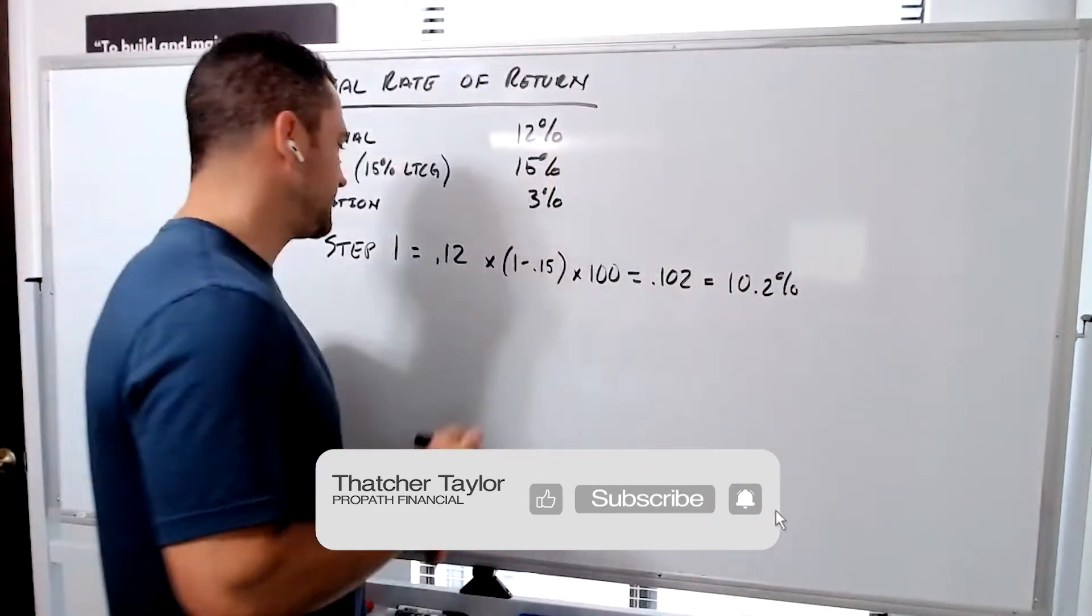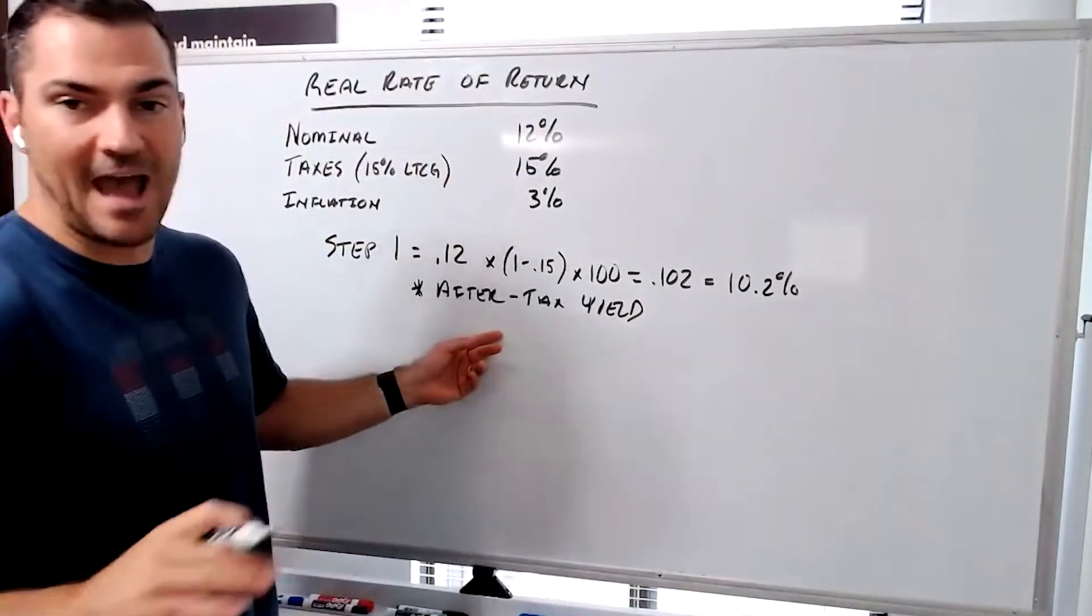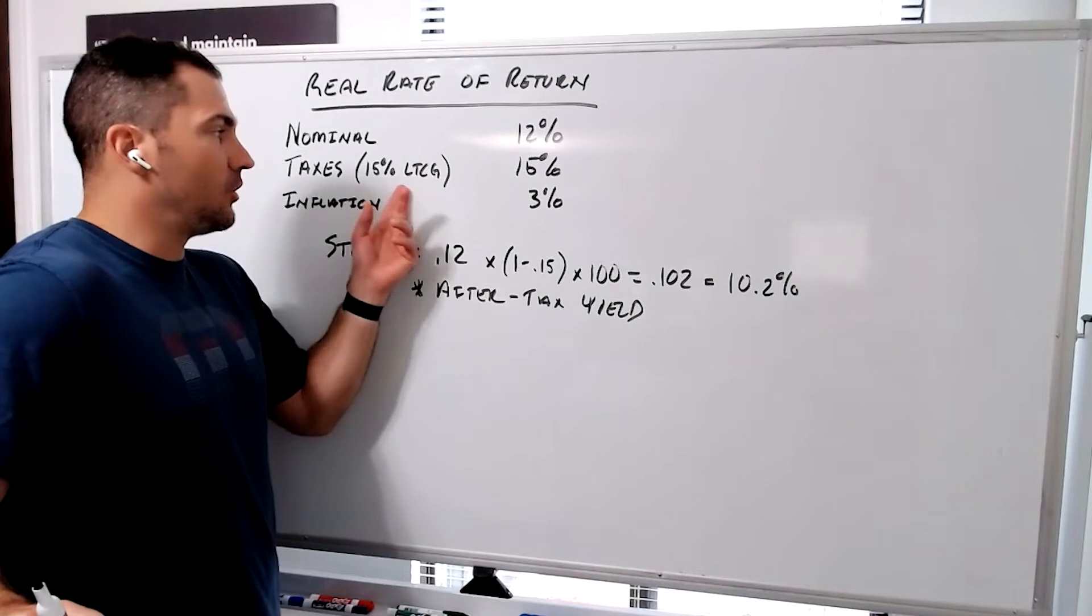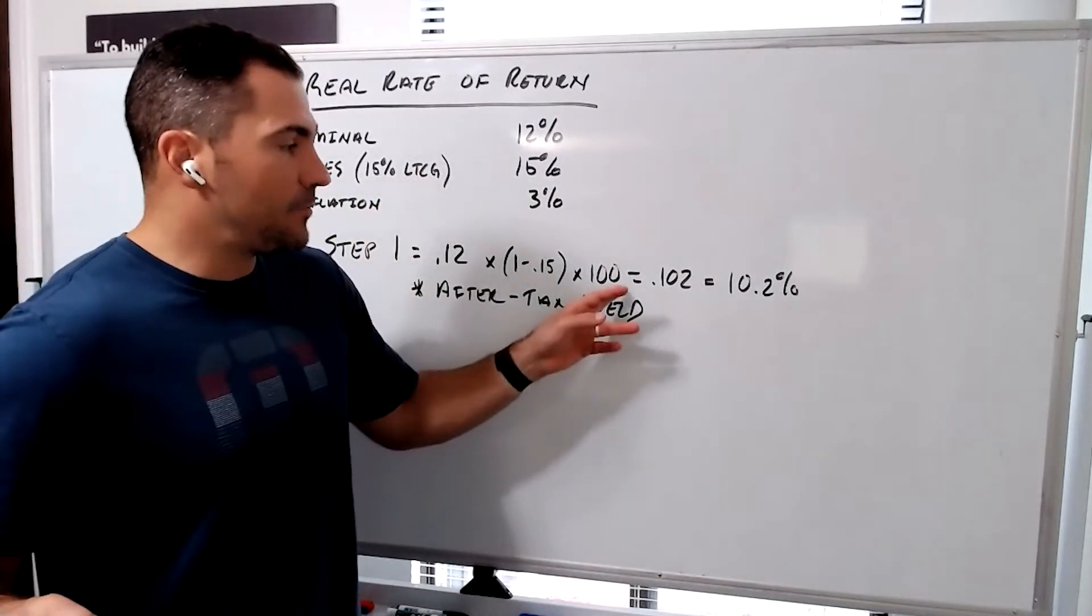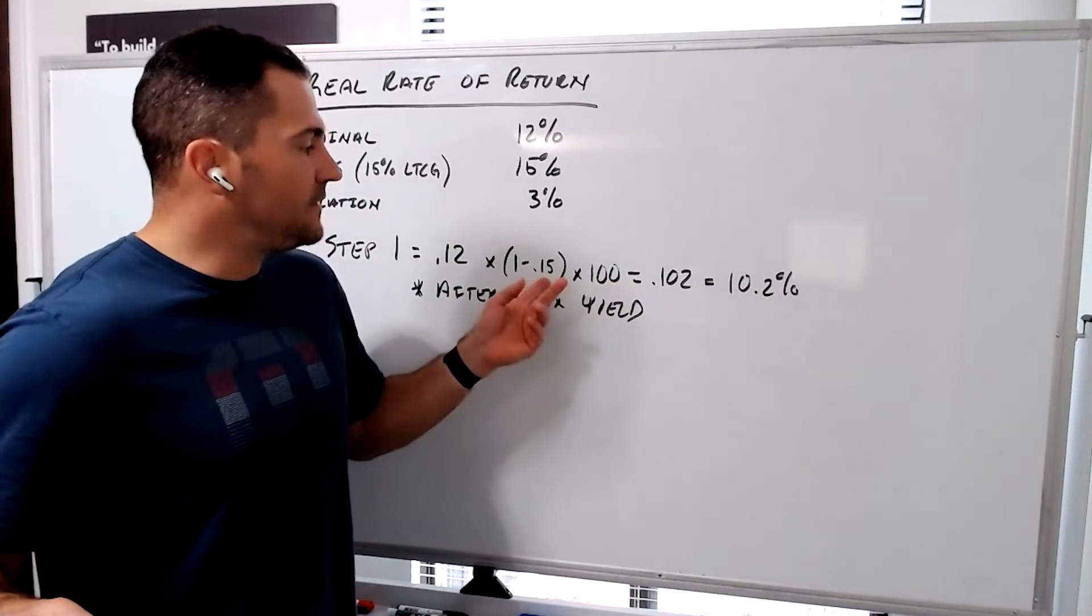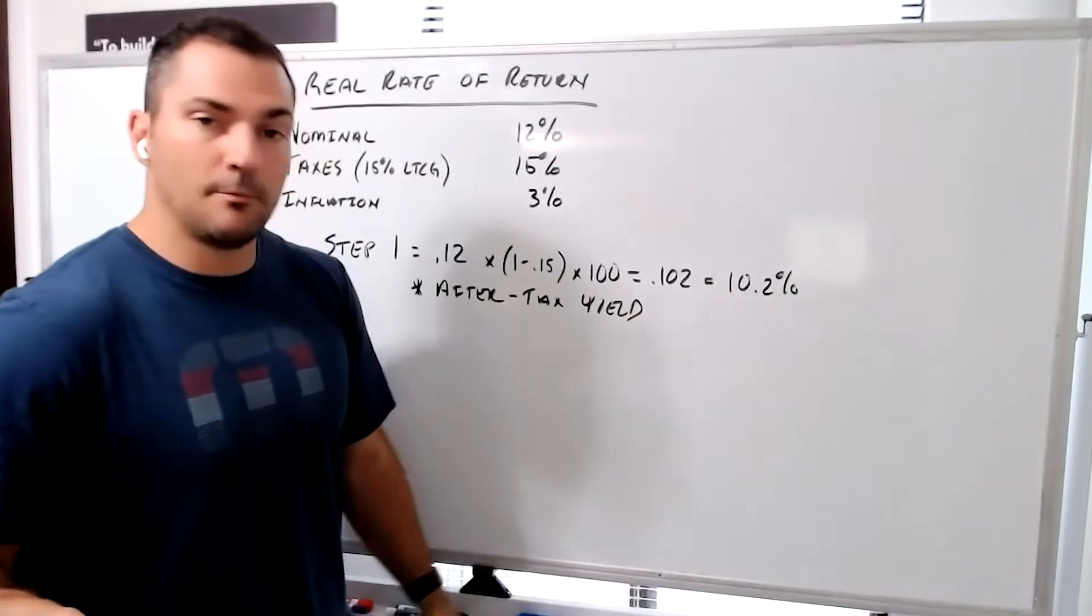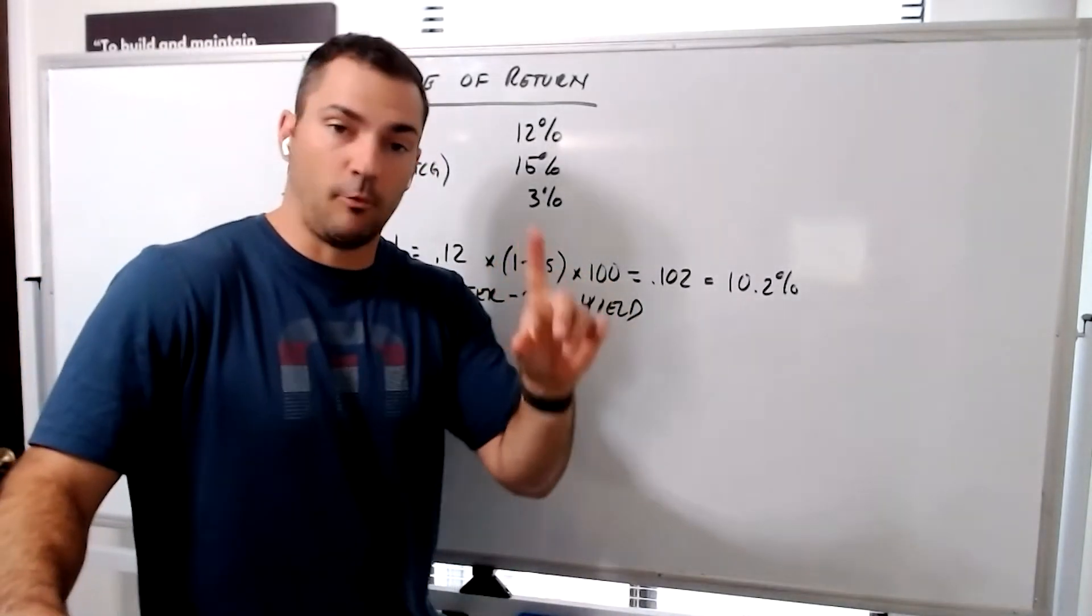And do we know what this is? This is our after-tax yield. So you think you made 12%, but if you sold at a long-term capital gain in a taxable brokerage account, you're going to have to pay some taxes. If you're at a 15% long-term capital gains tax rate, your actual return is 10.2% because you've got to take some of that money and send it to the IRS. That's step one.